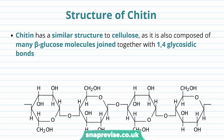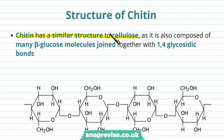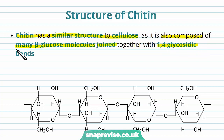Now let's talk about the molecular structure of chitin. It has some similarities to cellulose but also differences. The main similarity is that it's also composed of many beta glucose molecules as monomers, joined together into a chain with 1,4 glycosidic bonds.